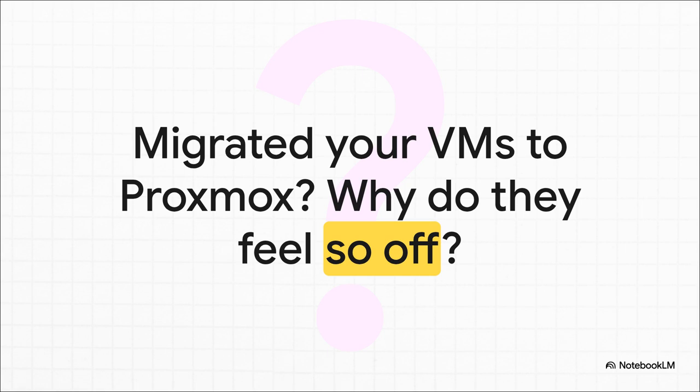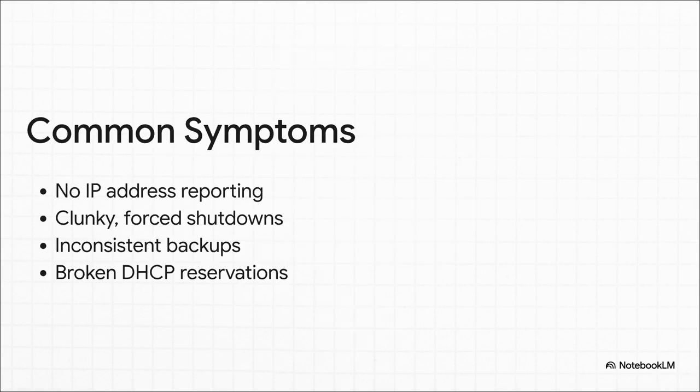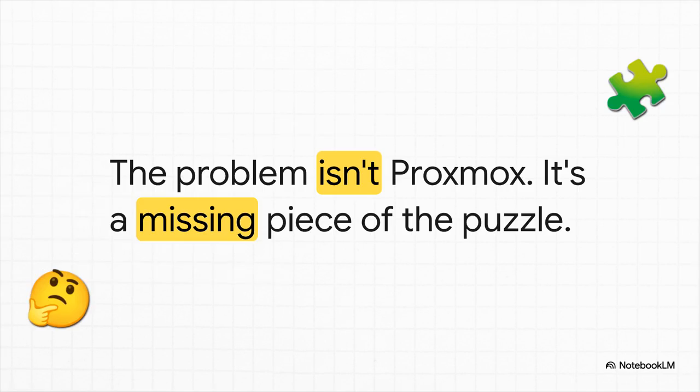So what is really going on here? If any of this looks familiar, you are absolutely in the right place. Maybe you're staring at the Proxmox summary and there's no IP address. Or maybe when you try to shut down a VM, it feels less like a shutdown and more like you're just yanking the power cord. Or your backups keep failing and you have no idea why. These aren't just random glitches — they're all symptoms of the exact same single, very often overlooked problem. And here's the good news: this is not some deep fundamental flaw with Proxmox, and it doesn't mean your migration was a failure. You're just missing one small but completely critical piece of the puzzle that lets your VM and your host talk to each other the way they're supposed to.